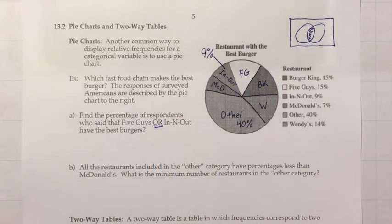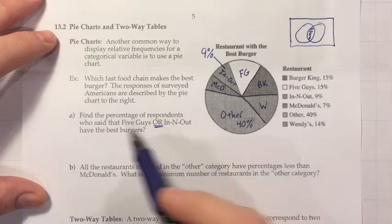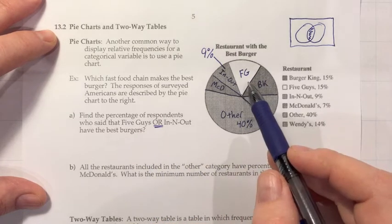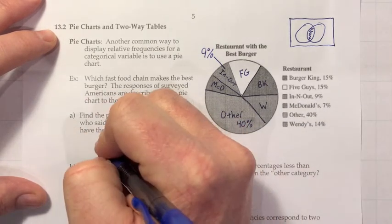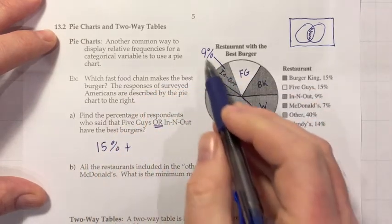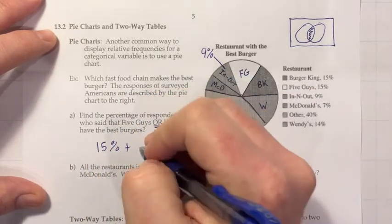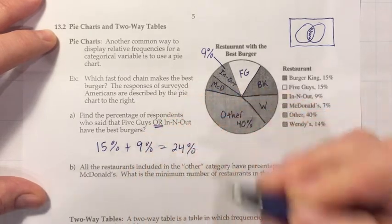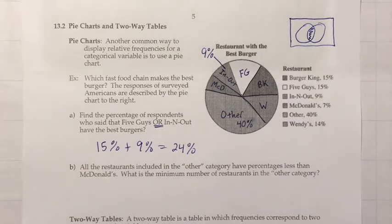What percentage of respondents said Five Guys or In-N-Out have the best burgers? We just take the Five Guys percentage — that's 15% — and add the In-N-Out percentage, which is 9%. So that gives us 24%. When they say 'or' and there's no overlap, you just count all of the first and add all of the second.